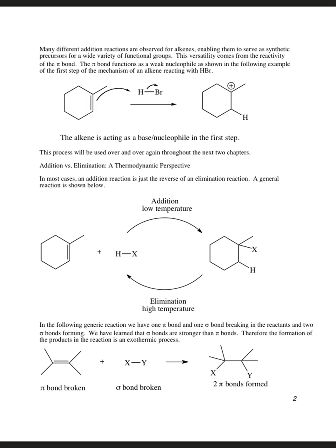Many different reactions are observed with alkenes, and basically it comes down to the pi bond being a nucleophile. The pi bond can attack the least electronegative atom of whatever we're adding to it, kicking out the more electronegative atom. As we said earlier in class, the more stable the cation is, the more substituted it is. So we're going to get the most stable cation we can when the pi bond attacks the less electronegative atom.